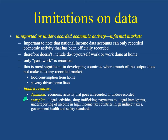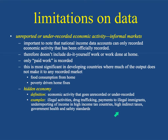This creates the idea of a hidden economy — economic activity that goes unrecorded or under-recorded. Examples include illegal activities like drug trafficking, payments to illegal immigrants, under-reporting of income in high-income-tax countries, high indirect taxes, and government health and safety standards. These give people an incentive not to report — if a company isn't meeting health and safety standards, it has an incentive to hide that because fixing it would be costly.